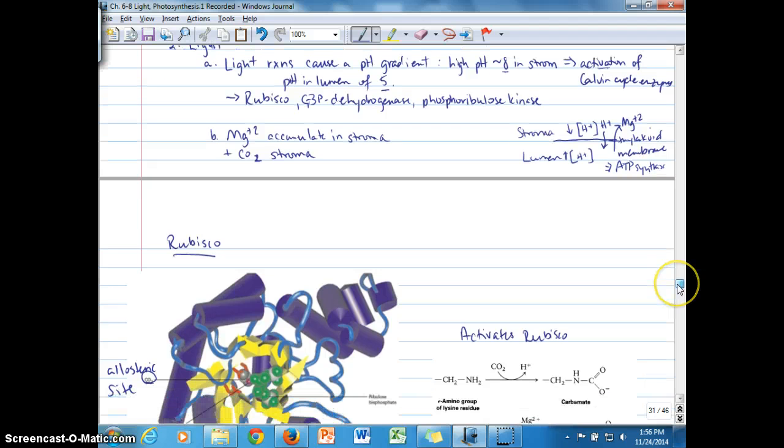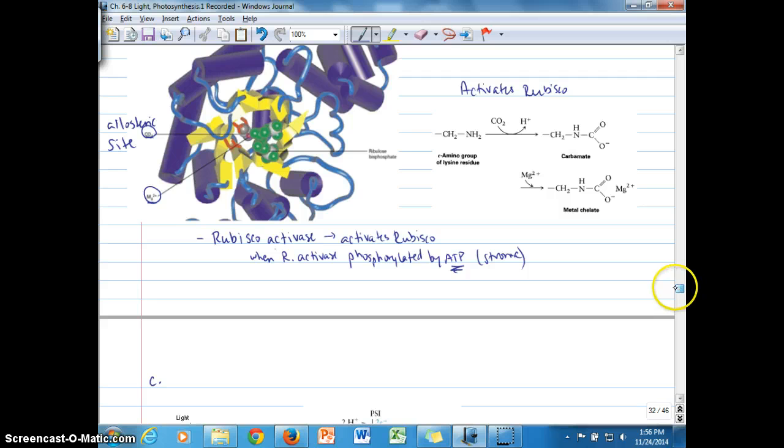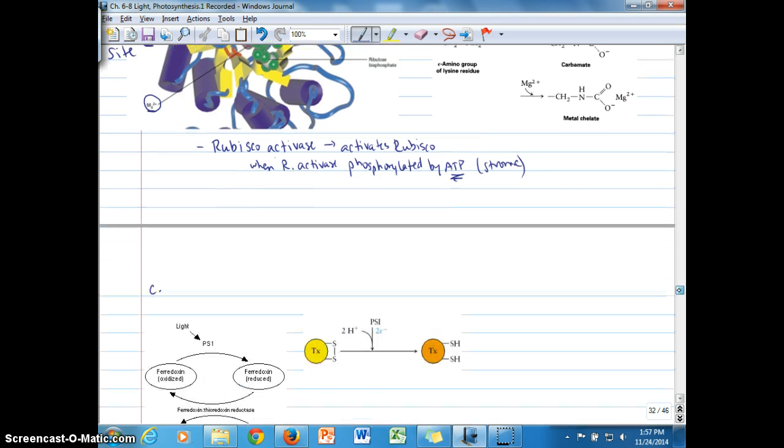So these are some important ways that, under B here, that describe the activation of rubisco resulting from the light reactions, the accumulation of magnesium in the stroma, CO2 that's in the stroma that bind to these allosteric sites and produce a conformational change in this enzyme to make it active. And the binding of rubisco activase, which is phosphorylated. And so next we're going to be looking at light activation of these, of several enzymes here.